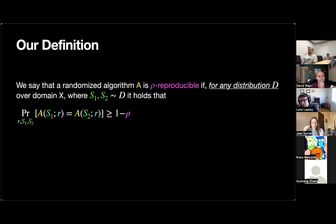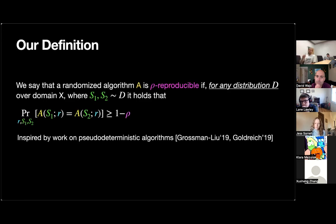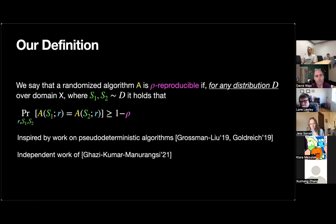We introduce a new notion of reproducibility as an algorithmic property. We're going to say an algorithm A has the property of being reproducible. Our notion specifically captures reproducibility for randomized algorithms under resampling. Informally, this requires that an algorithm should output the exact same result with high probability if its randomness is held fixed between the two runs, but its input dataset is resampled from the same underlying distribution. Our definition is inspired by work on pseudodeterministic algorithms, notably work by Grossman and Liu and Goldreich, and is also independently studied by Badi Ghazi, Ravi Kumar, and Passan Manurangsi at Google, who call it pseudoglobal stability and use it to get results for user-level privacy.